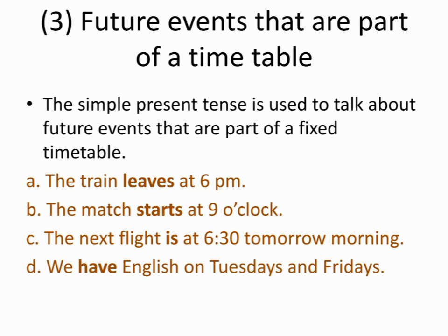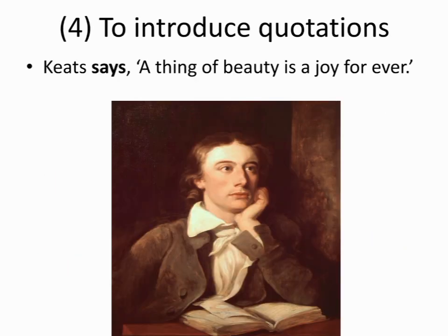Once again, the third use of the simple present tense is for future events that are part of a timetable. The fourth use is to introduce quotations. An example: 'A thing of beauty is a joy forever.' This sentence is in the simple present tense — it's a famous quotation by John Keats.